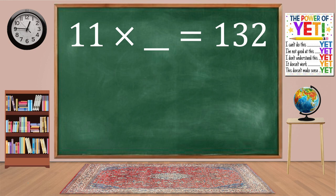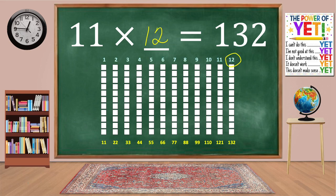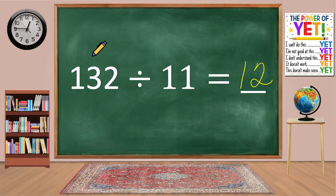132 divided by 11 equals blank. Our related fact is 11 times what equals 132? Skip count: 11, 22, 33, 44, 55, 66, 77, 88, 99, 110, 121, 132. We have 12 columns. 11 times 12 equals 132. 132 divided by 11 equals 12.